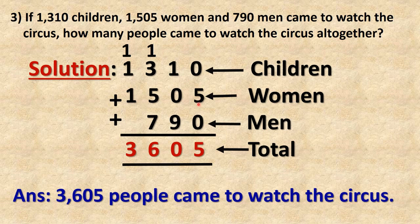0 plus 5 plus 0 is 5. 1 plus 0 plus 9 is 10 — write 0, carry 1 to hundreds place. 1 carry plus 3 plus 5 plus 7 is 16 — write 6 in hundreds place, carry 1 to thousands place. 1 carry plus 1 plus 1 is 3. The final answer is 3,605 people came to watch the circus.